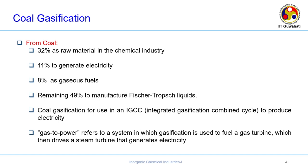Looking at uses of gases from coal: 32% of gases are used as raw material in the chemical industry; 11% to generate electricity; 8% as gaseous fuels directly - such as methane, ethylene, or BTX aromatics (benzene, toluene, xylene). The remaining 49% is syngas, usually to manufacture Fischer-Tropsch liquids. In later modules we will see how the Fischer-Tropsch process is manipulated to produce either alcohols or alkanes - all with syngas as the starting material.